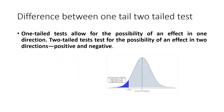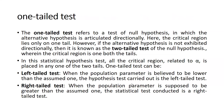A one-tail test allows for the possibility of an effect in one direction. A two-tail test allows for the possibility of an effect in two directions — positive and negative. You can see the normal distribution curve, the bell-shaped curve. If there is a possibility of an effect in one direction only, either on the left side or towards the right side, we apply a one-tail test. But when there is no direction, we apply a two-tailed test.